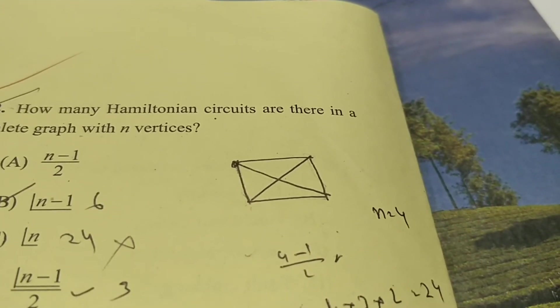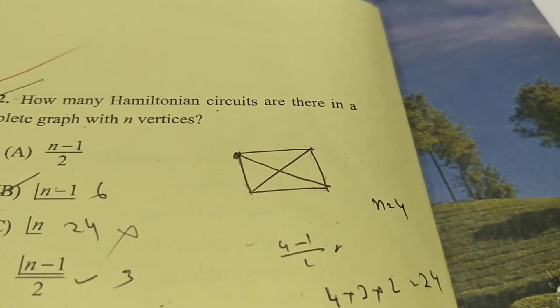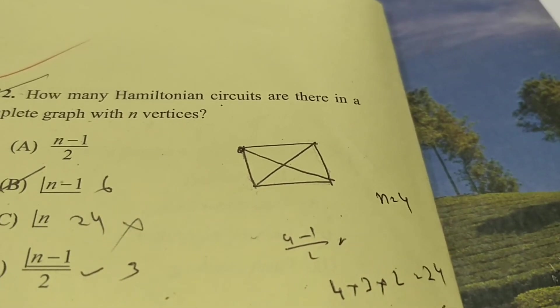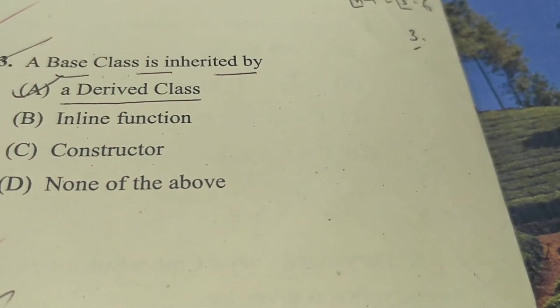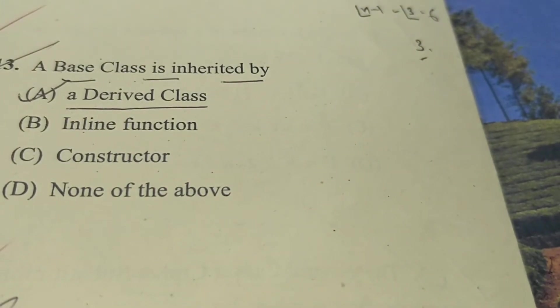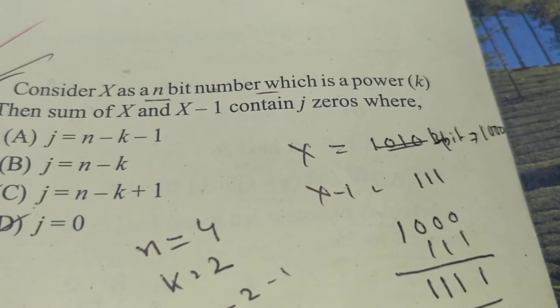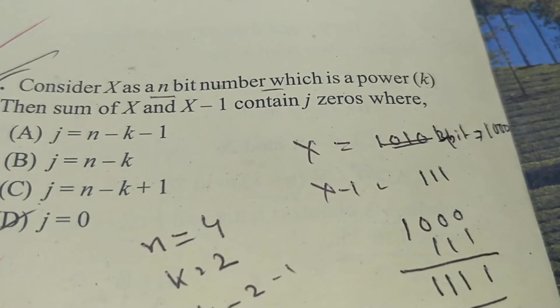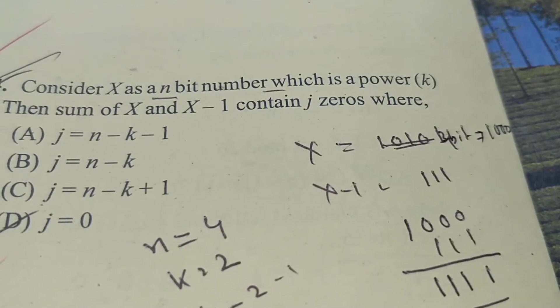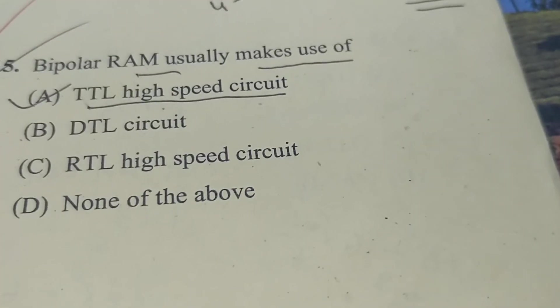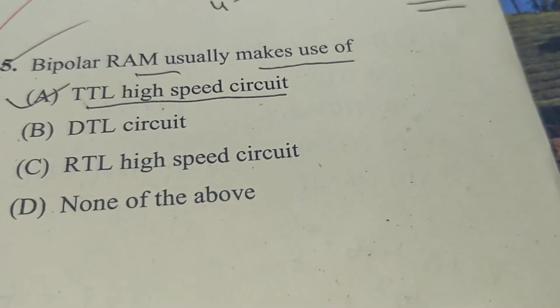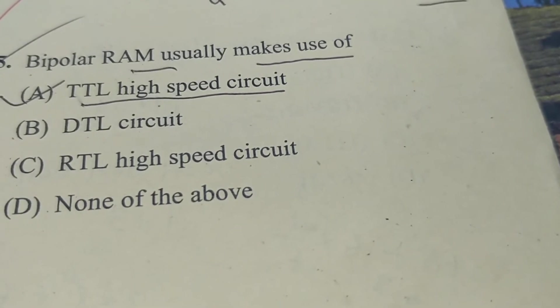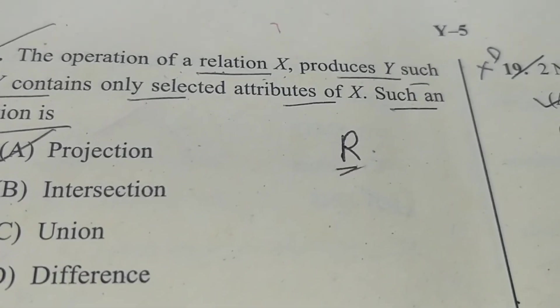Now question number 12: how many Hamiltonian circuits are there in a complete graph with N vertices? N-1/2 factorial is incorrect. (N-1)! factorial - this is correct. So B is the correct answer, question number 12. Now question number 13: a base class is inherited by a derived class. Option A is the correct answer. Question 14: consider X as an n-bit binary number which is a power of 2. The sum of X and X-1 contains J zeros where J equals 0. So option D is the correct answer. Bipolar RAM usually makes use of TTL high-speed circuit, DTL circuit, RTL high-speed circuit, none of them. So the correct answer is A: TTL high-speed circuit.